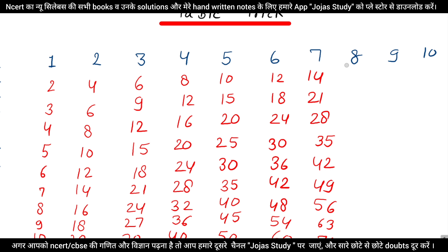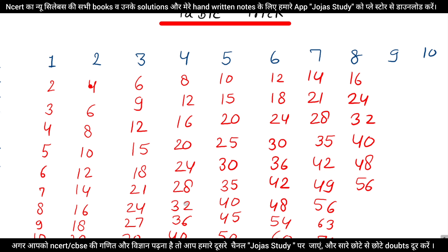Now the 8 table — how do we do 8? 1, 2, 3, 4, 5, 6, 7, 8, 9, 10, 11, 12, 13, 14, 15, 16, 17, 18, 19, 20, 21, 22, 23, 24, 25, 26, 27, 28, 29, 30, 31, 32, 33, 34, 35, 36, 37.